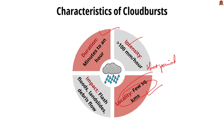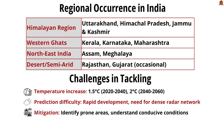Third, cloudbursts cause flash floods — rapid accumulation of rainwater leading to sudden and severe flash floods, landslides, and debris flow. Fourth, duration — cloudbursts usually last from a minute to an hour but cause substantial damage due to their intensity.